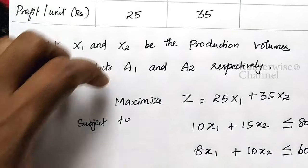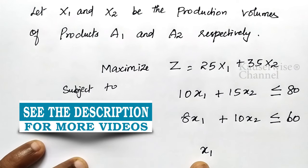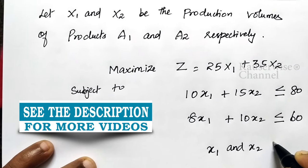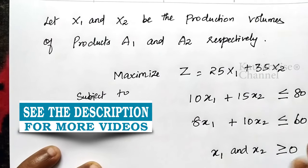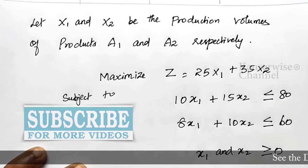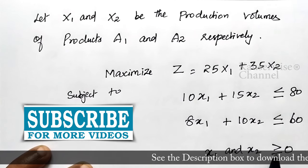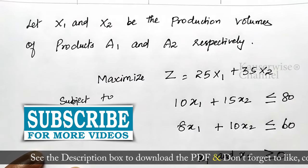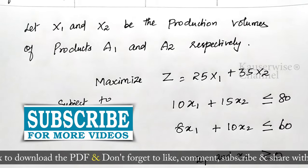This is the way to construct the model. And finally, you have to write the non-negative constraints: X1 and X2 must be greater than or equal to 0. Since we are finding X1 and X2 values in order to maximize profit, the final X1 and X2 values must be non-negative — meaning positive only, greater than or equal to 0. This is the way to formulate or develop an LPP model based on the problem.